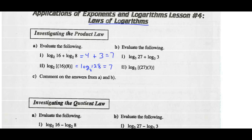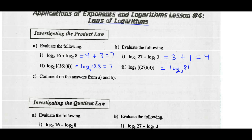Try part B. Log 27 base 3 — common log 27 divided by common log 3 is 3. And log of 3 base 3 is 1. So 3 plus 1 is 4. And if you go log of 27 times 3 base 3, write that as a single logarithm: 27 times 3 is 81, base 3. Common log 81 divided by common log 3 is also 4. So comment on the answers from A and B — in A, parts 1 and 2 have the same answer; B, parts 1 and 2 have the same answer. So the answers are the same.